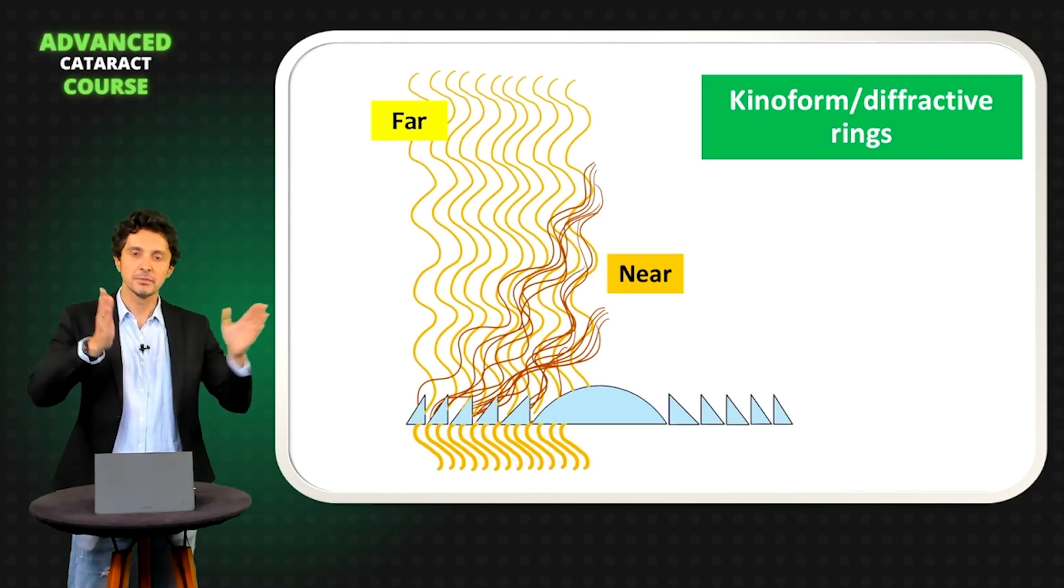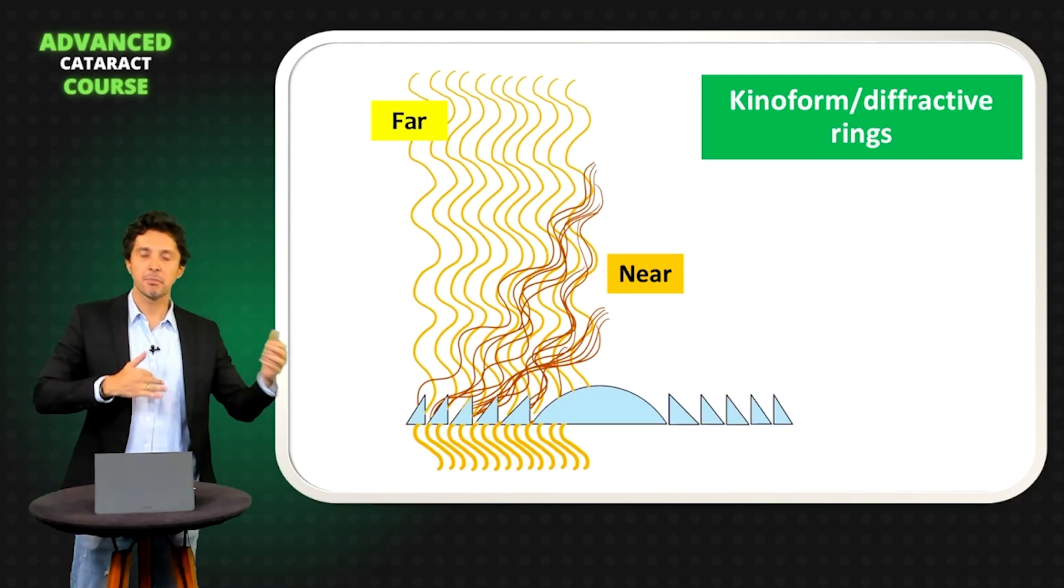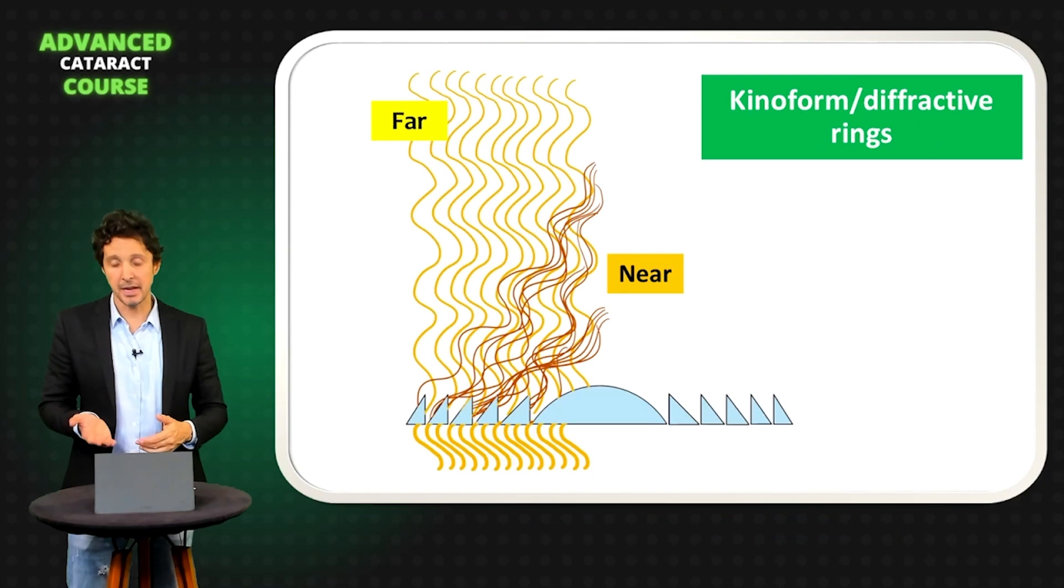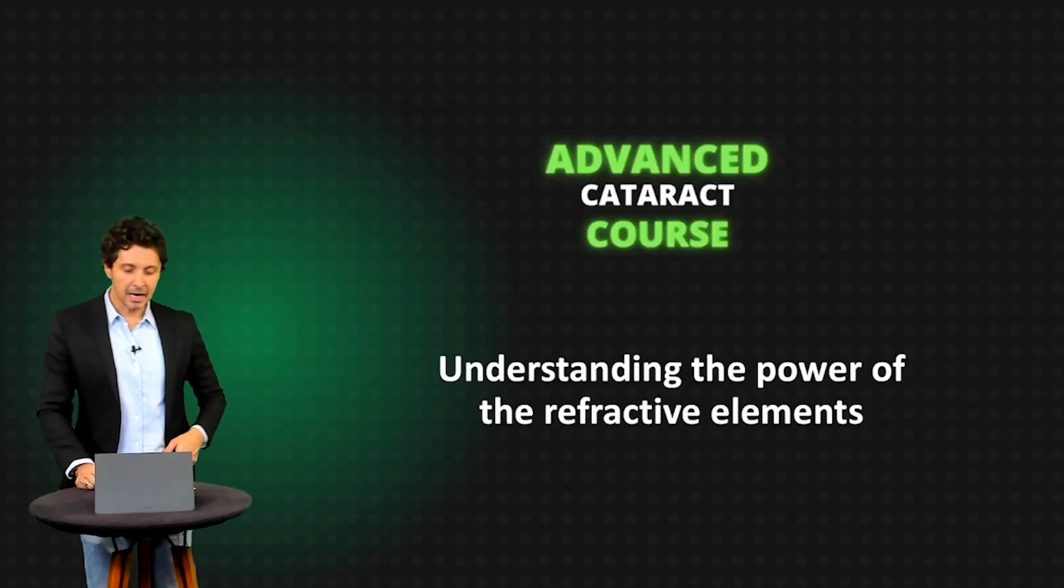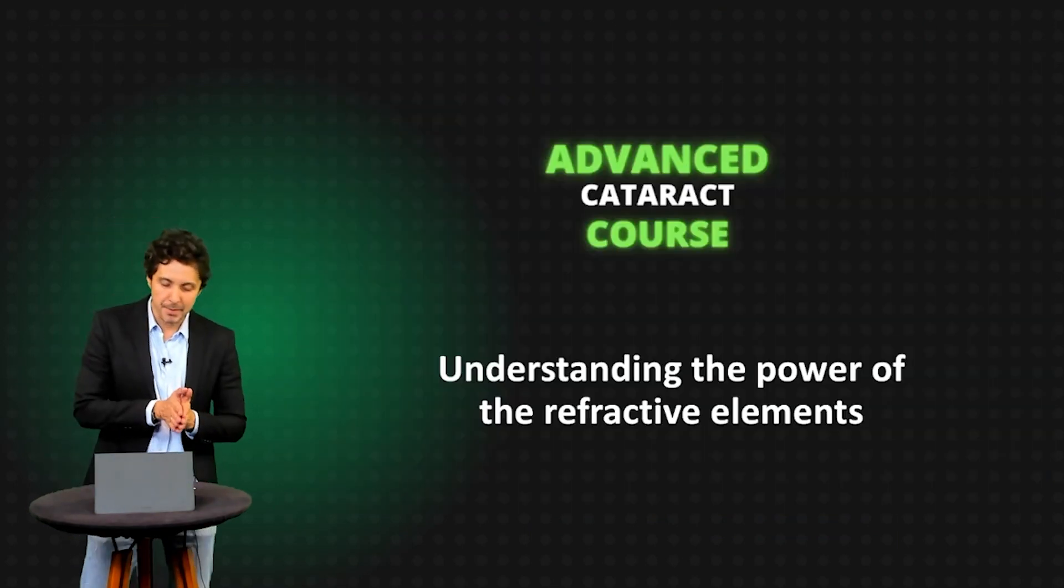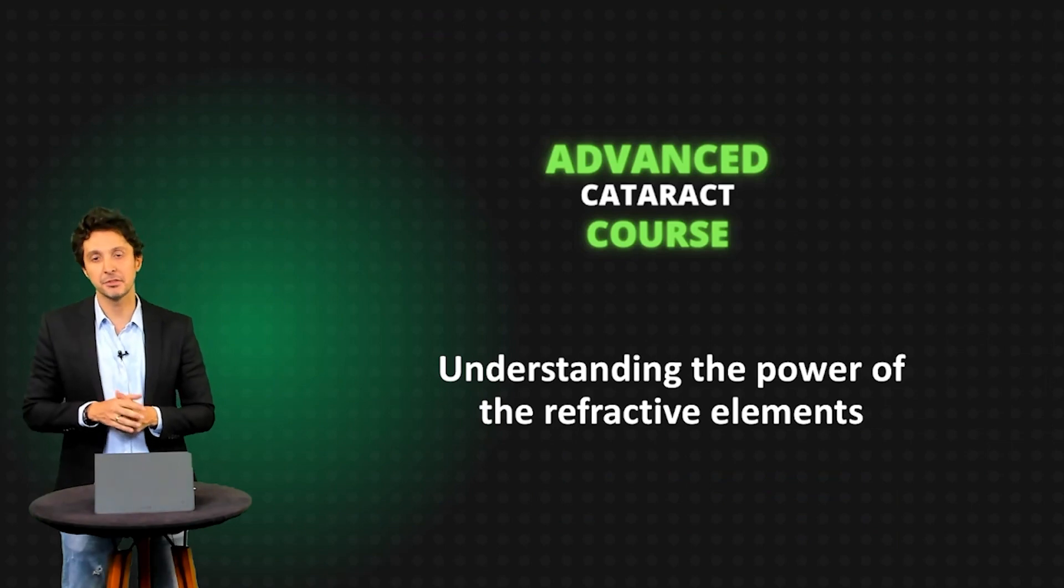The kinoform divides the light part to near, part to far, part to intermediate. Now, let's go to understand the power of the refractive elements, the diffractive rings.